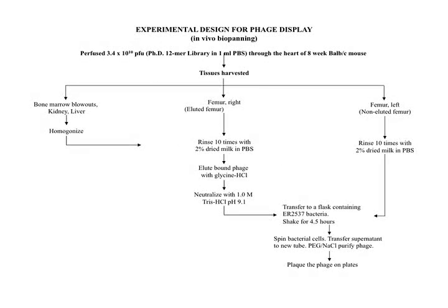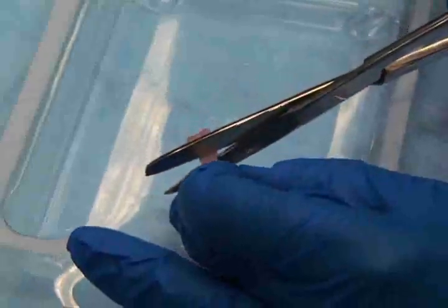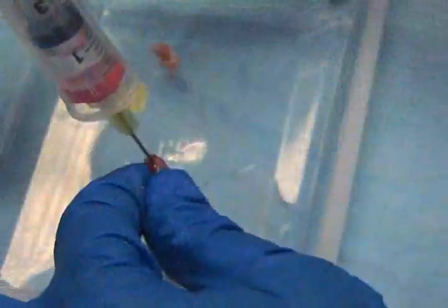For the in vivo biopanning procedure, perfuse 10 x 10 to the 10th plaque forming units of the NEB PHD-12 phage display peptide library through the heart of a 10-week-old BALB-C mouse. After approximately 5 minutes, euthanize the mouse, expose and dissect the femurs, cut off the ends and remove the bone marrow. Rinse the left femur both inside and outside with PBS 10 times, then add the bone to ER2537 bacteria.